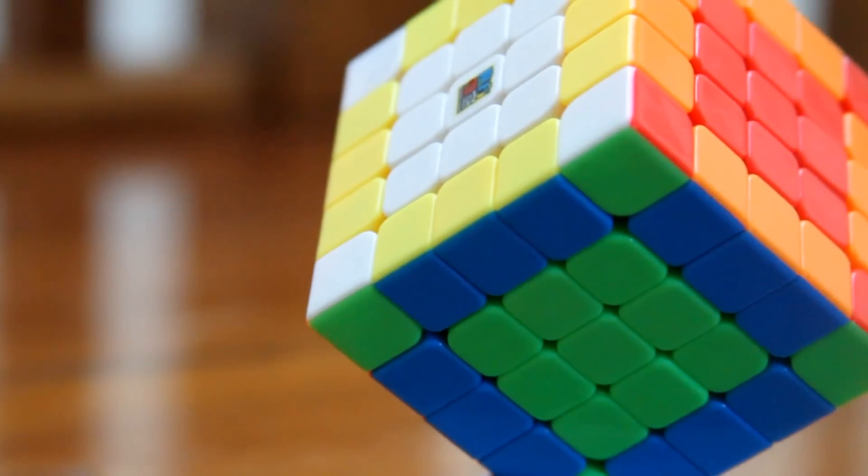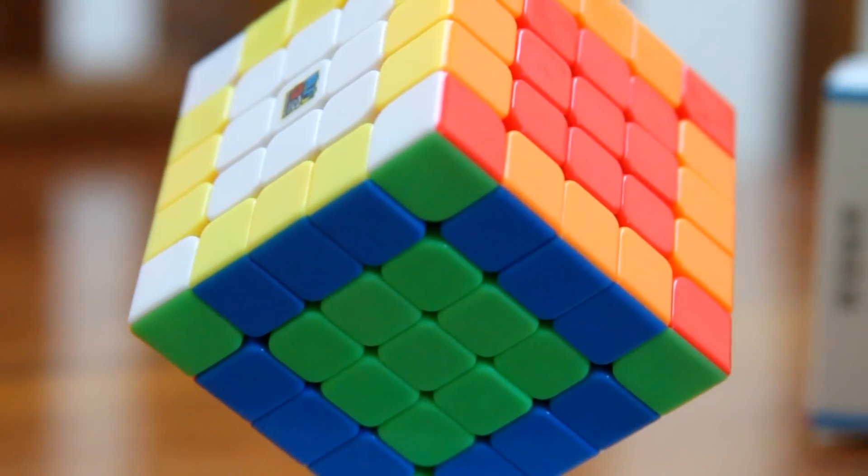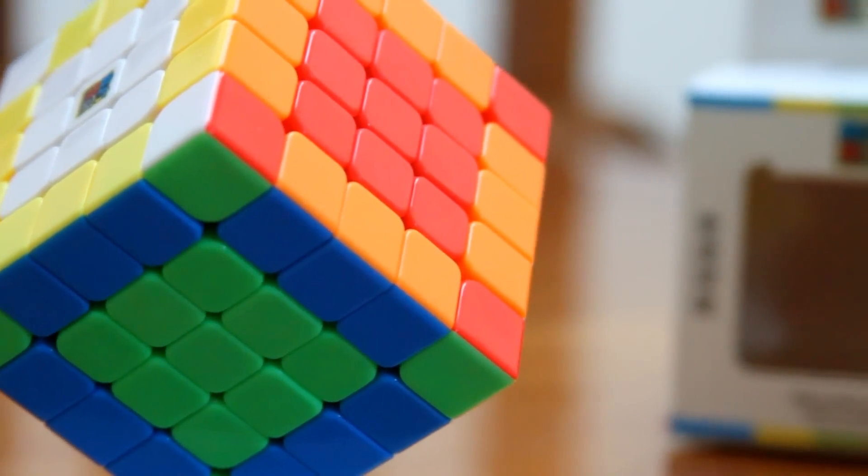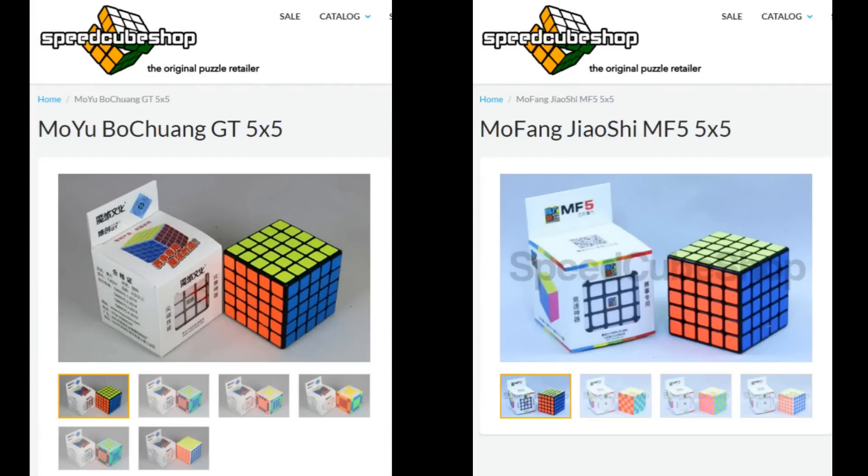So on to the last category, 5x5. The MF5 from Cubing Classroom is a clear choice for me, and believe it or not, at $9, it performs as well as a $20 5x5.